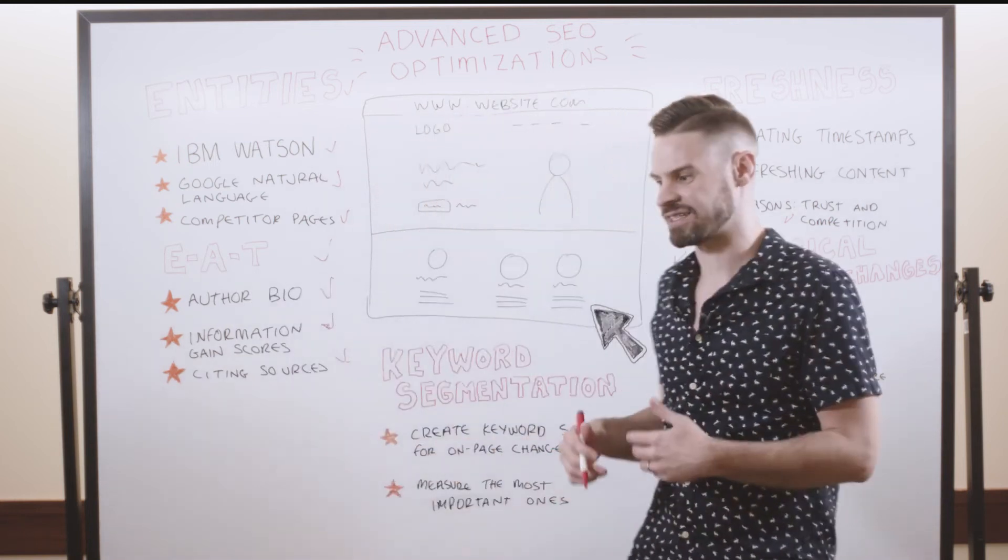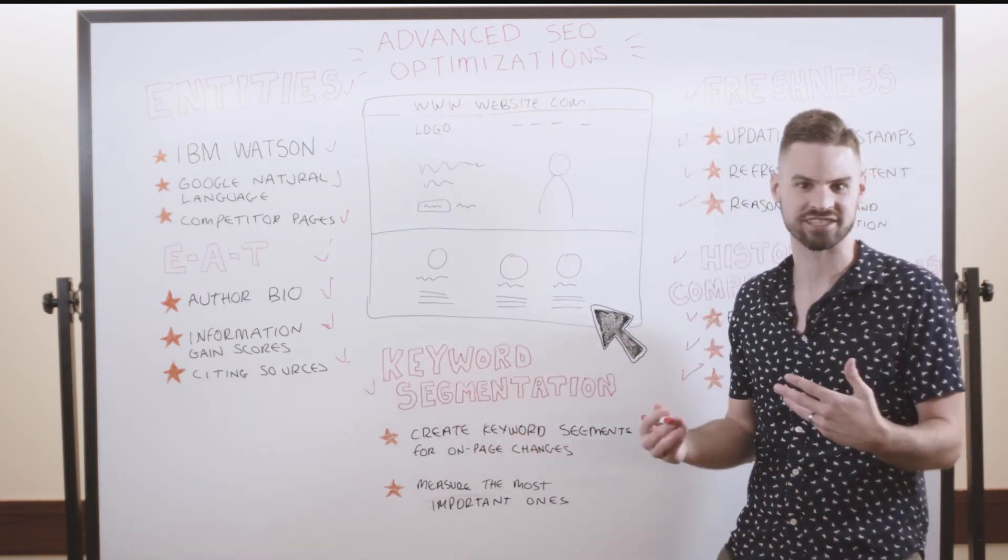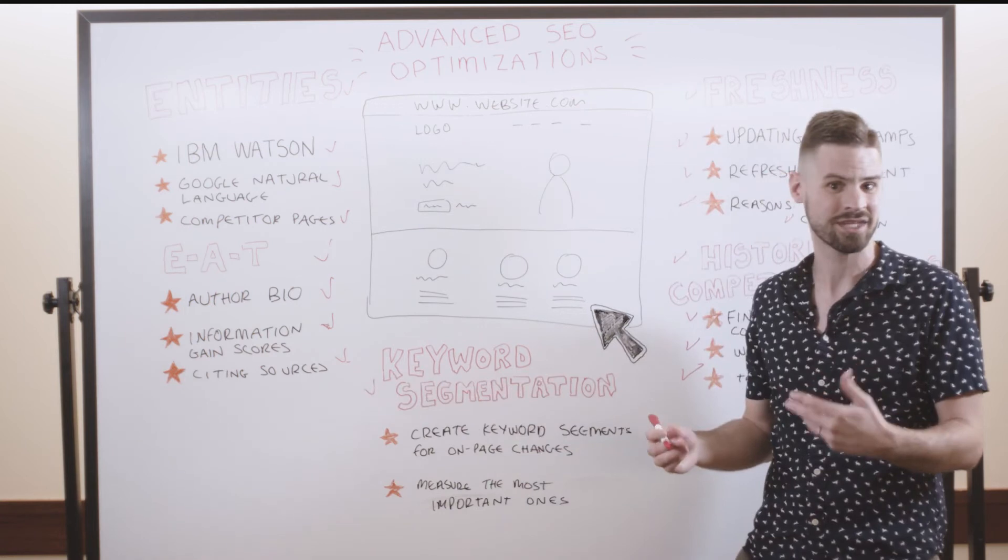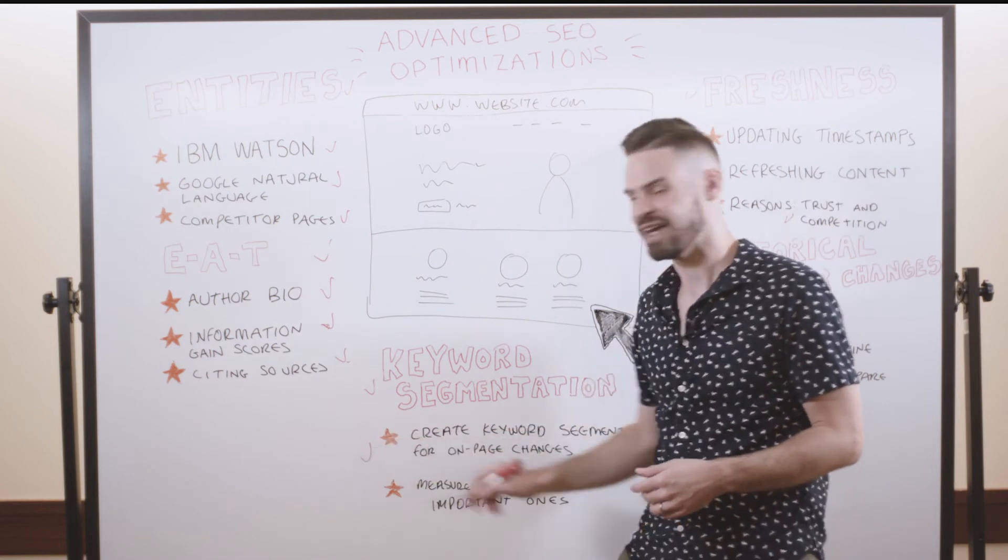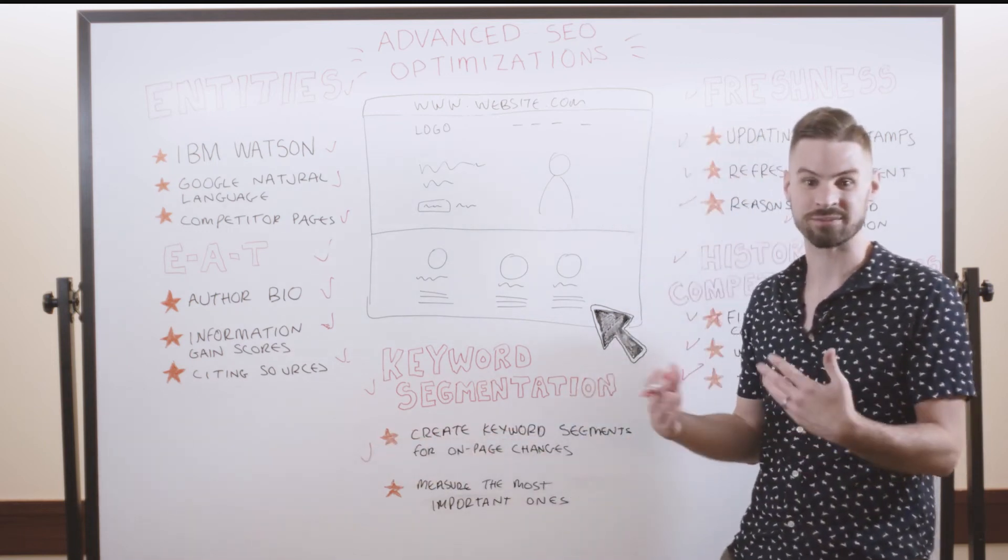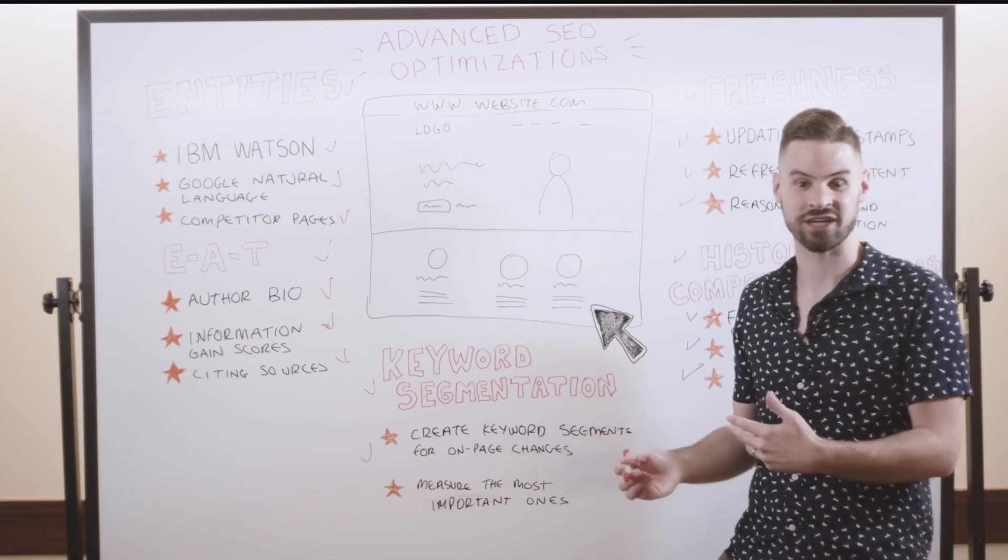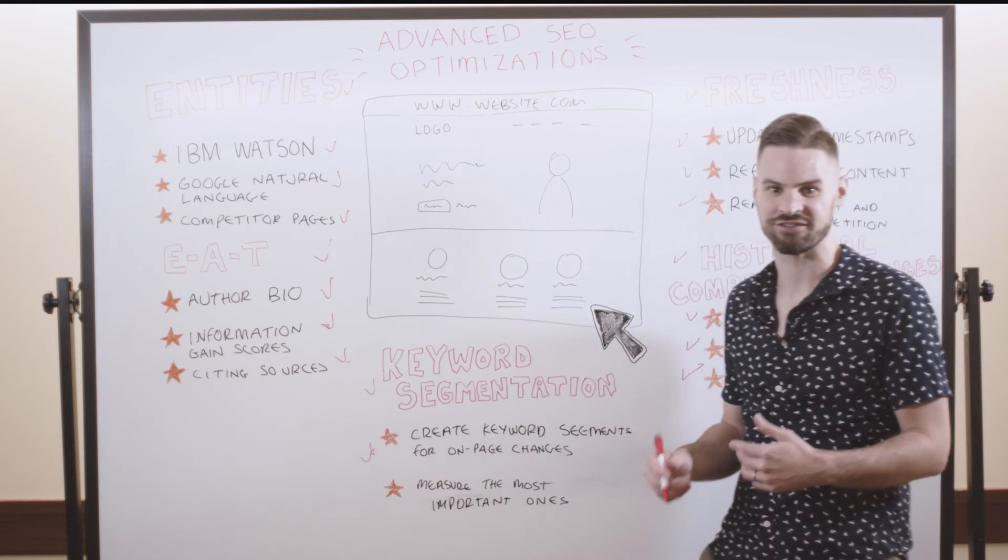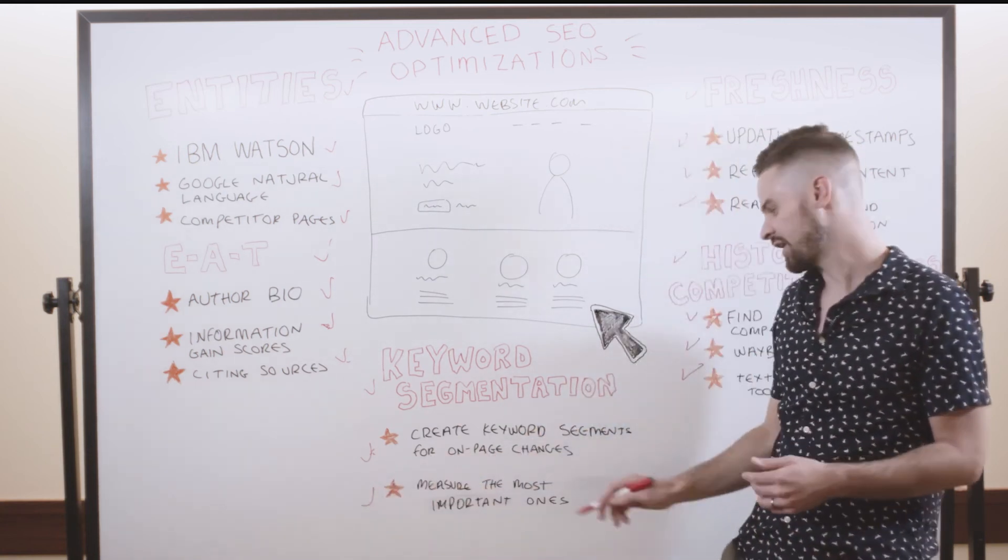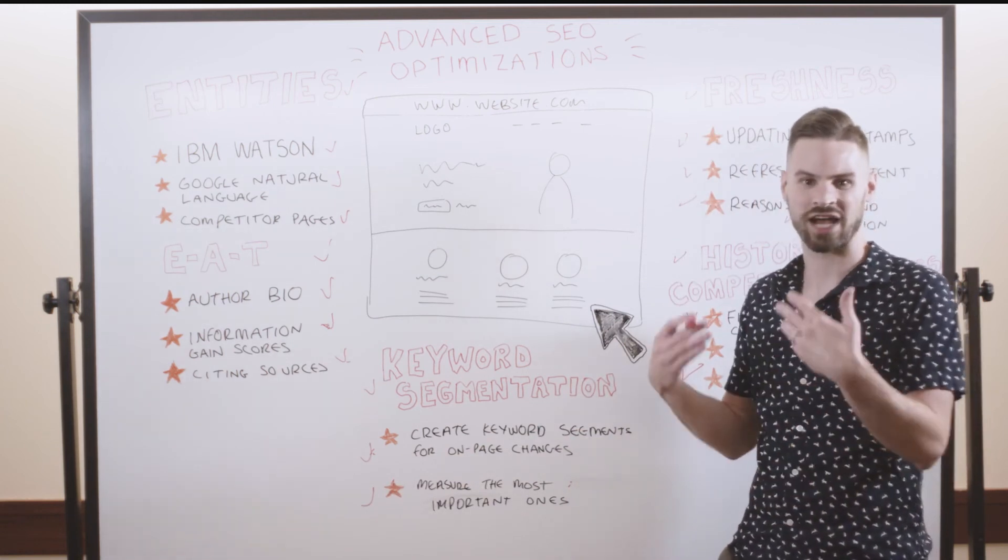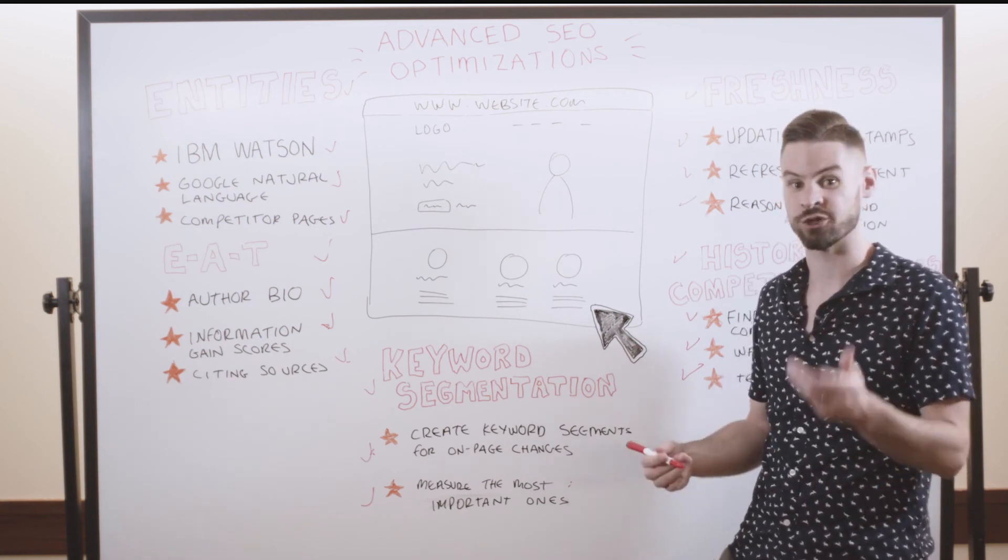The final aspect of advanced on-page optimizations I want to talk about is this concept of keyword segmentation. We segment our traffic data in Google Analytics all the time, but we don't segment our keyword data in the same way. So using tools like STAT, we can actually create keyword segments anytime we do some type of on-page optimization. If we update entities, if we update freshness, if we update EAT, we can create keyword segments in all of those different instances. And then over time, we can compare the segments against each other and measure what the most important ones have been that will actually give you better data about what type of on-page optimizations work best for your specific sites.